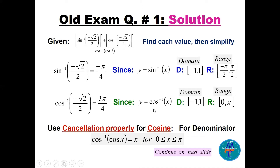For cosine inverse of negative √2/2, the range is 0 to π, which is quadrant 1 or 2. Since cosine is negative, we look in quadrant 2. The reference angle is π/4, so π minus π/4 equals 3π/4. That's the answer for this cosine inverse.